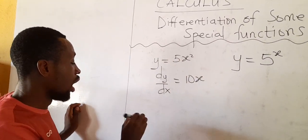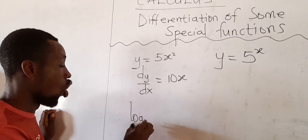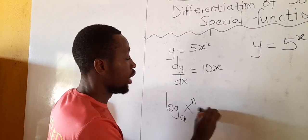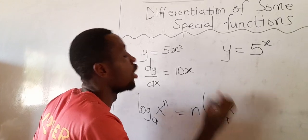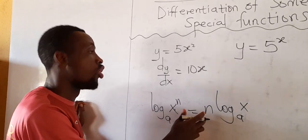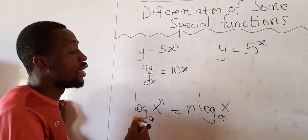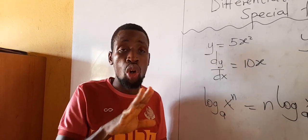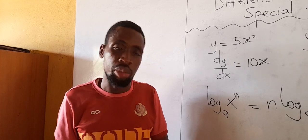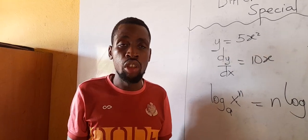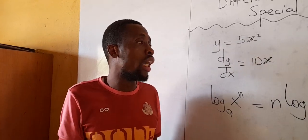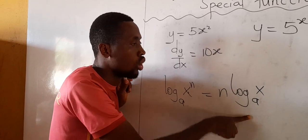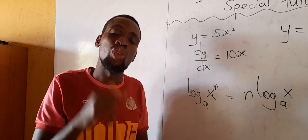Before we start to differentiate this, let's learn this logarithmic rule: log base a of x^n equals n times log base a of x. We are aware of this, and we are going to use this concept to differentiate. With our knowledge in the differentiation of logarithmic functions and this rule, we don't have a problem. If you did not watch my video on differentiation of logarithmic functions, please check it out on YouTube.